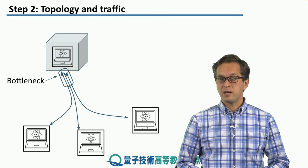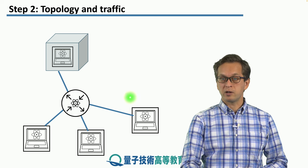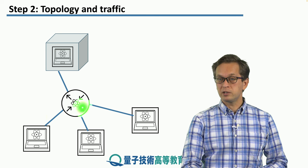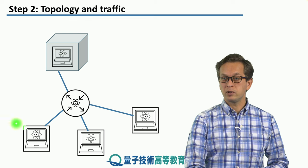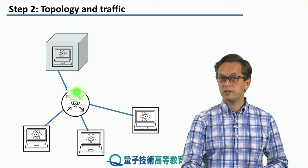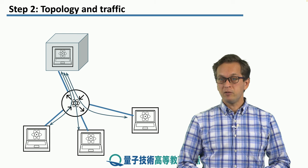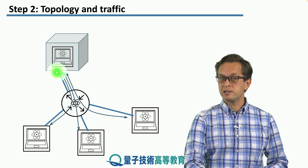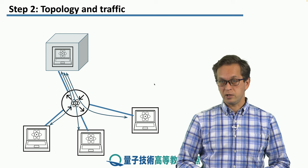If we think about how we might want to implement such a scenario, this is one possible implementation, where we put a quantum router in here and the clients first connect to the router and the router connects to the mainframe. So the router routes the quantum information from each client into the mainframe and back. Now the traffic patterns flow this way, and it's more clear that this link over here connecting the mainframe and the router is shared by multiple connections.